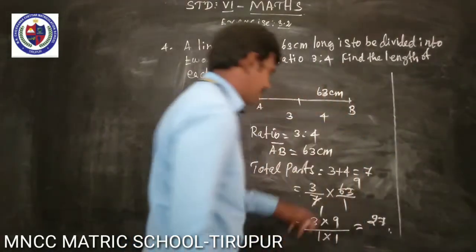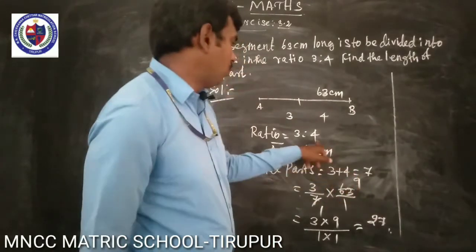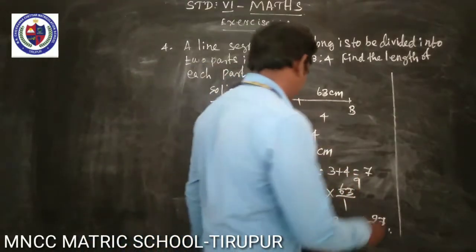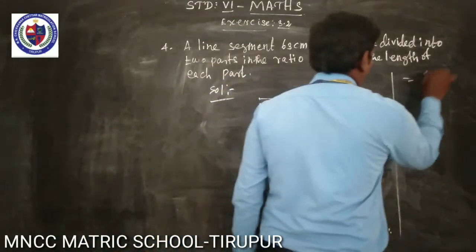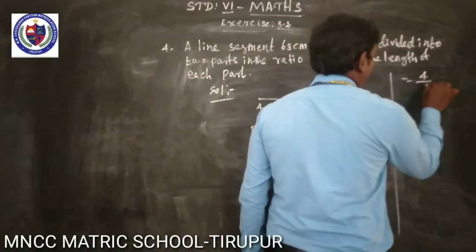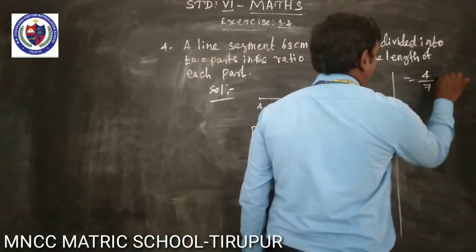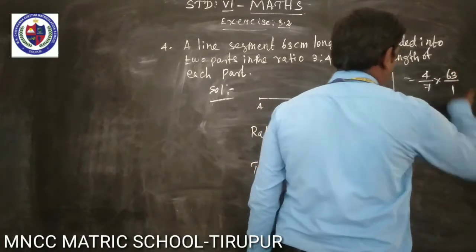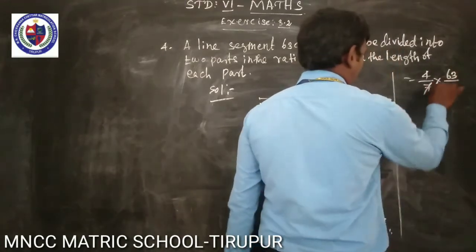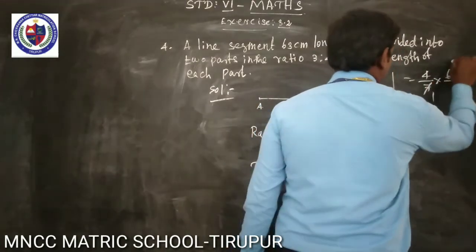Next, we have 4. The second part equals 4 divided by 7, multiplied by 63, which gives 9. So 4 times 9 is 36.